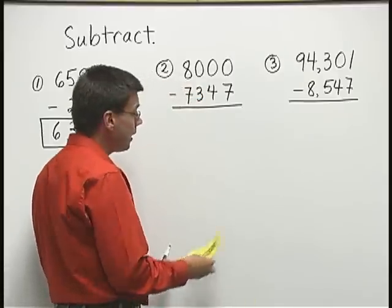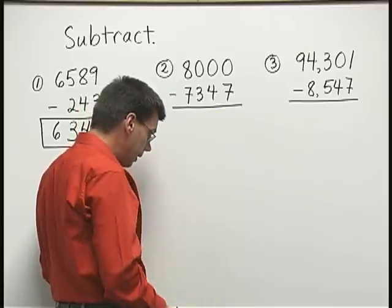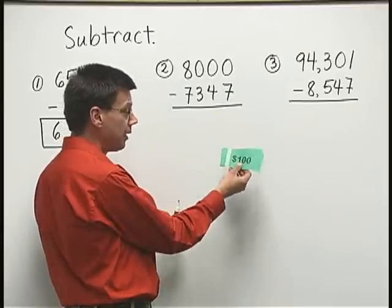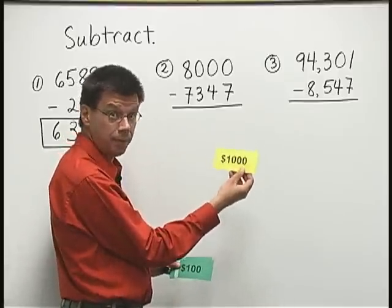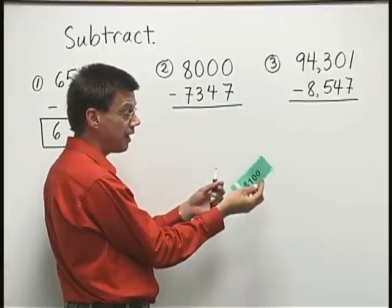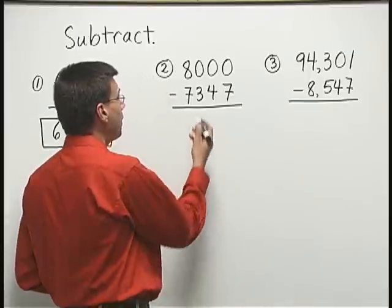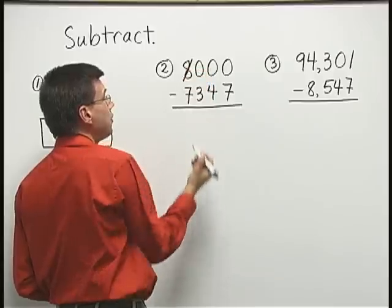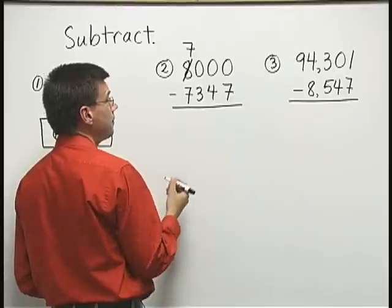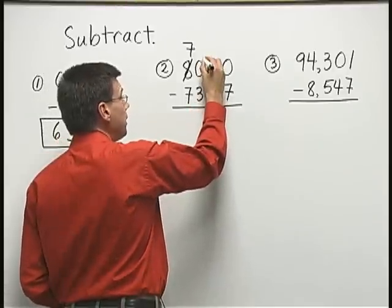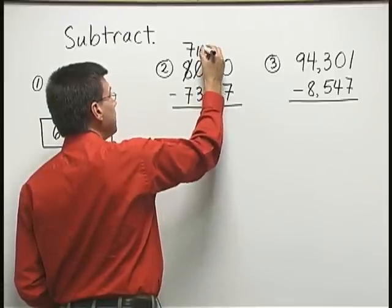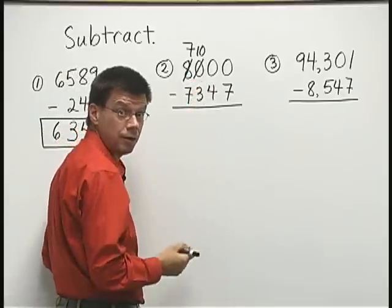In fact, what I'm going to do is I'm going to take one of my thousands and exchange it for ten one-hundreds. It's kind of like exchanging a thousand-dollar bill for ten one-hundred-dollar bills here. I have a stack of ten one-hundreds. Because we exchange one of our thousands, we're only left with seven thousands. And the ten one-hundreds that we get in exchange, I represent by writing a ten above the zero in the hundreds place.